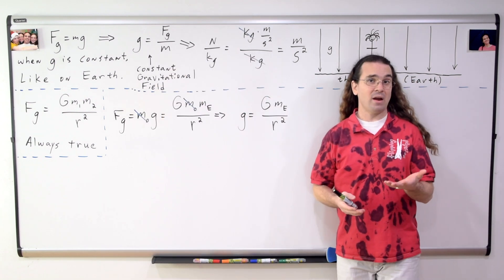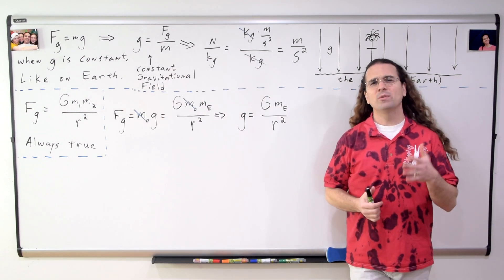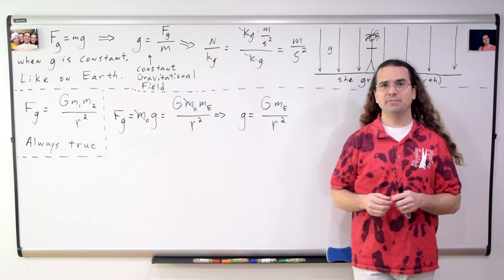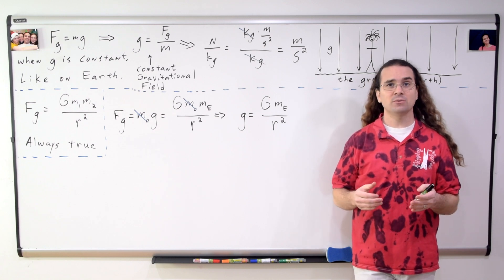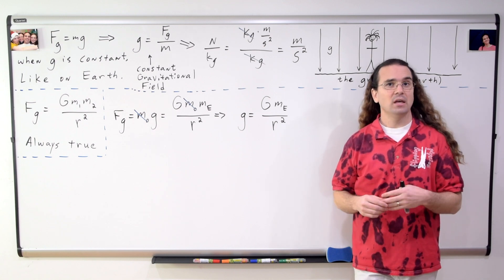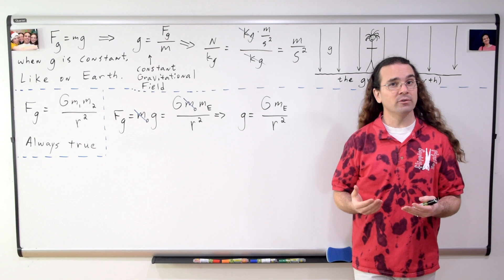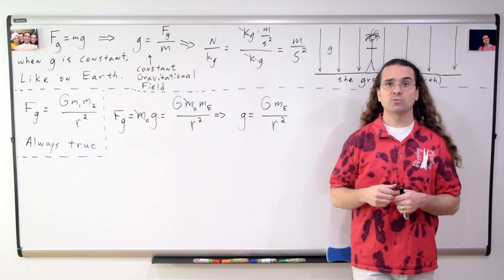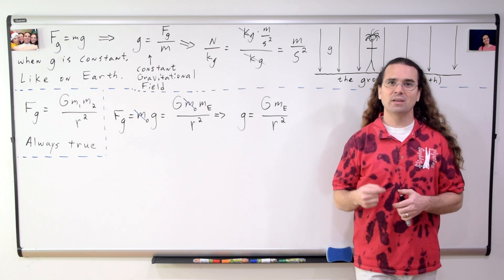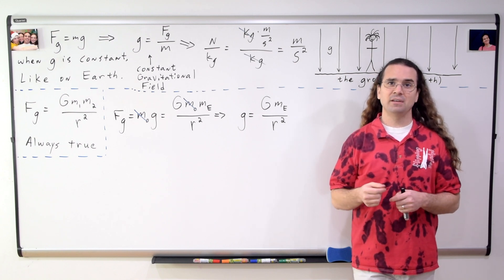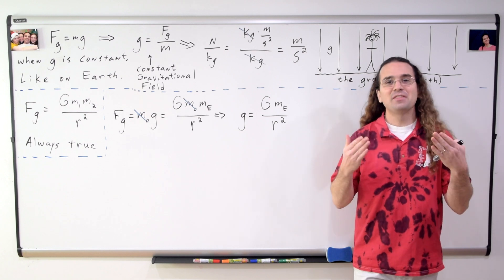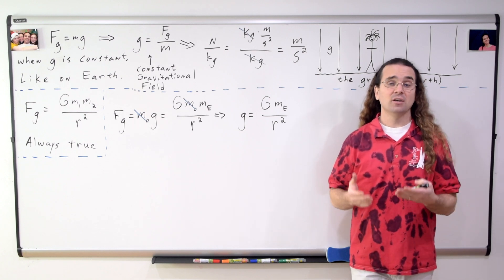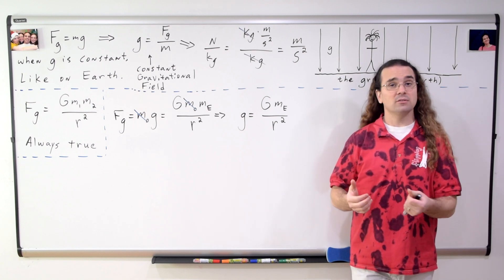Correct. We have derived this equation before. However, realize now we can identify this as the gravitational field which surrounds and is caused by the Earth. And more generally, if we replace the mass of the Earth in this equation with the mass of any object, you get the gravitational field that surrounds and is caused by any object.